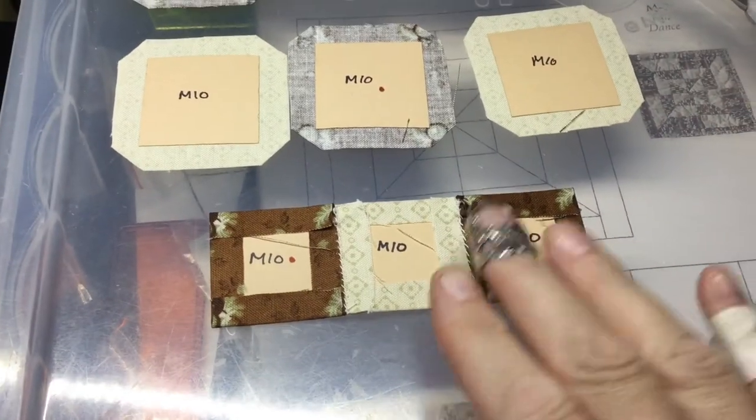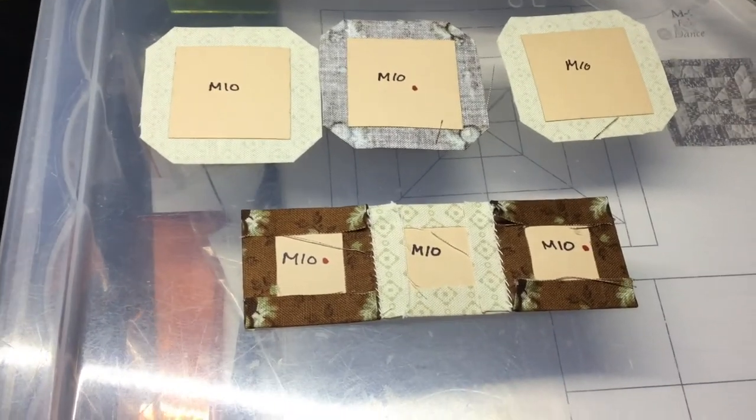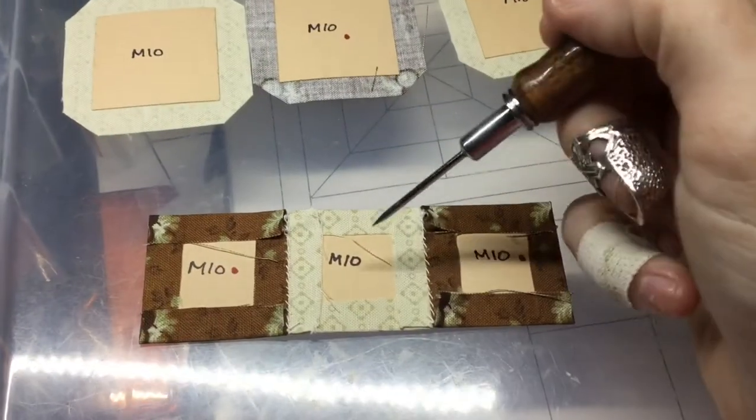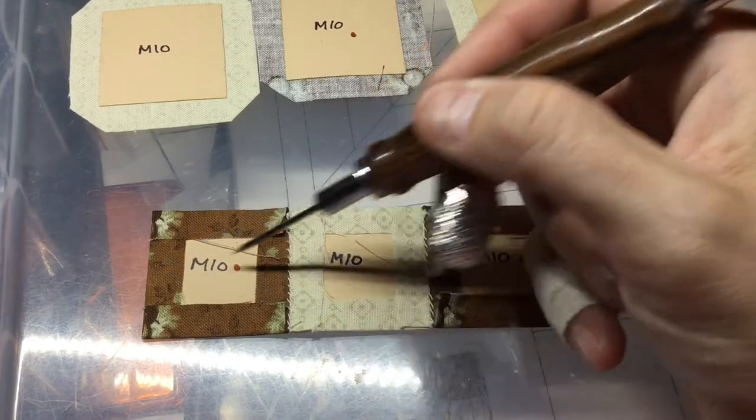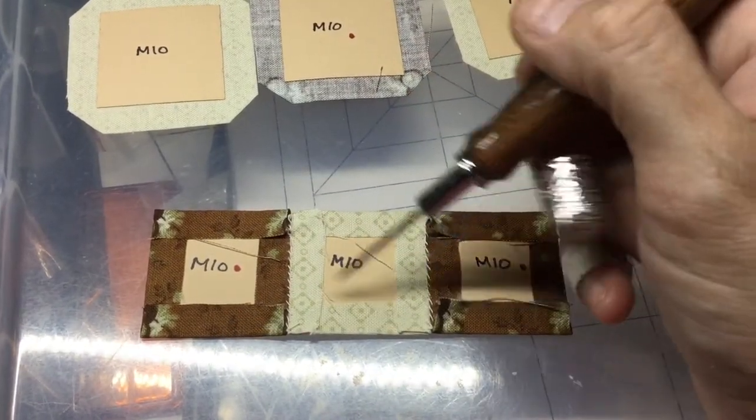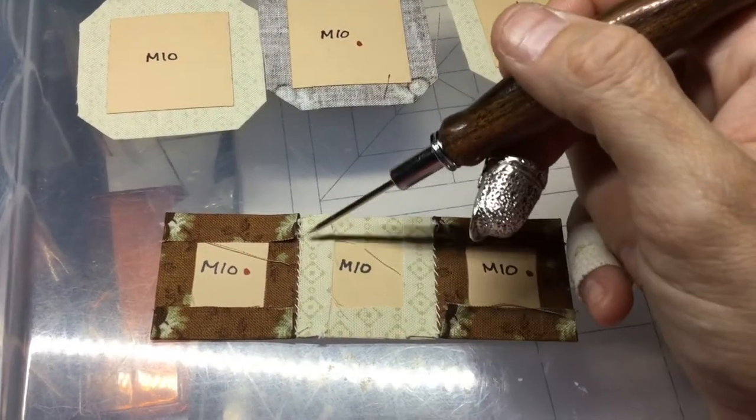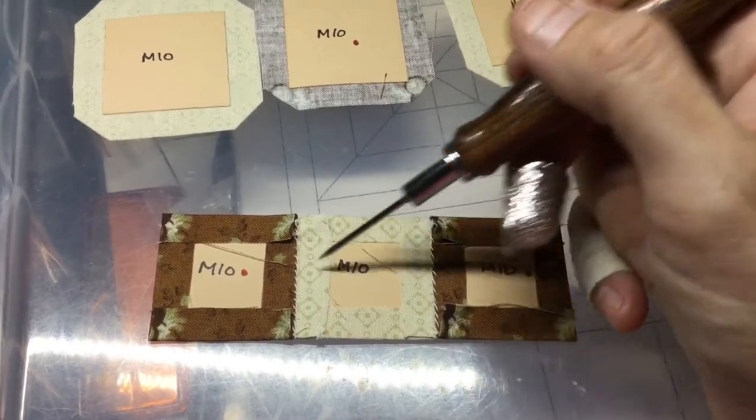So I've got my bottom row assembled, and you can see what I mean by the basting. I've basted these two sides first and then these, and then this one I did these two and then these. That's why they're on top, so the thickness isn't as much on the here.